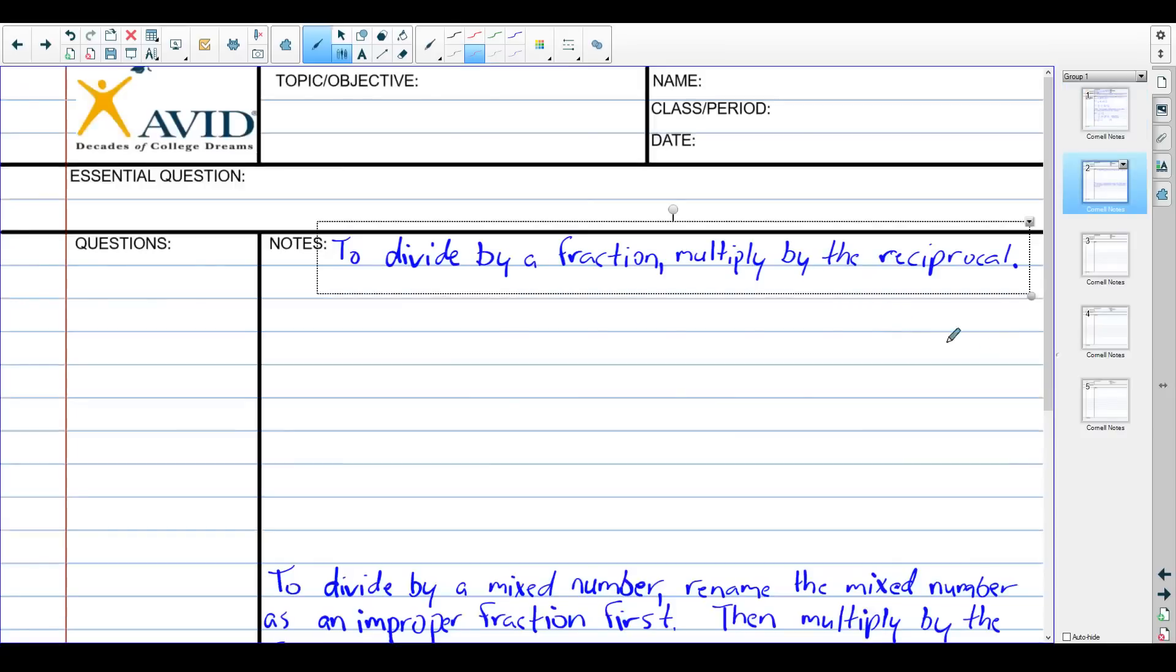Now that we've done multiplication, we can talk about division. If we want to divide by a fraction, multiply by the reciprocal, which is just a fancy way of saying flip the fraction over.